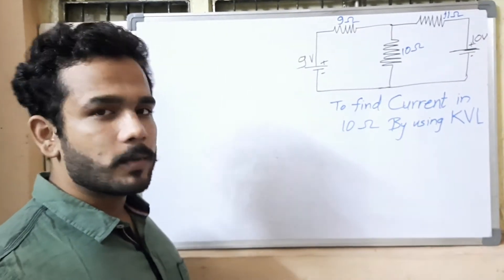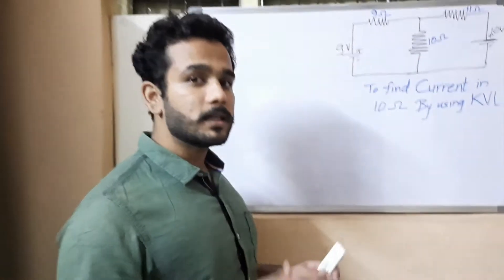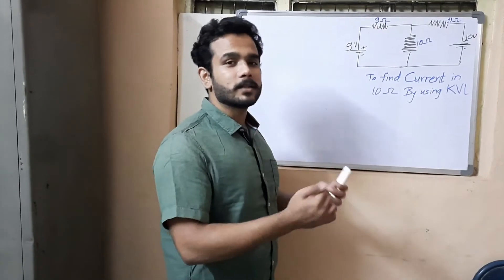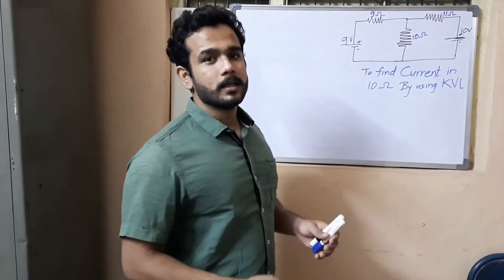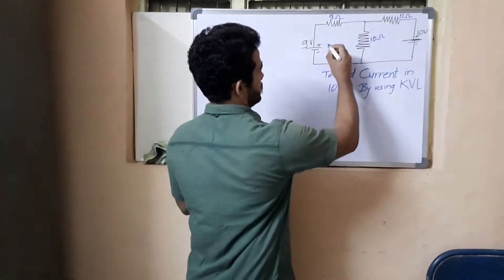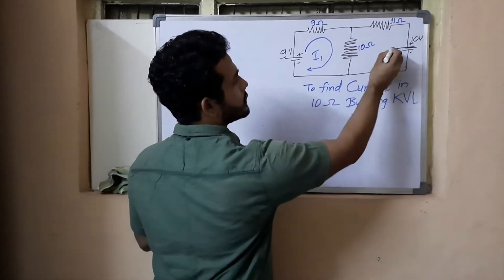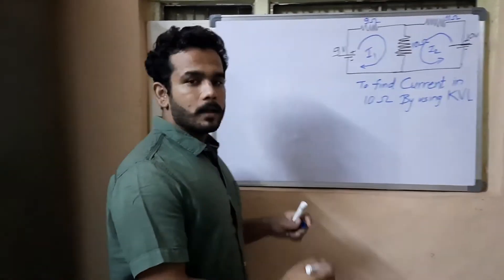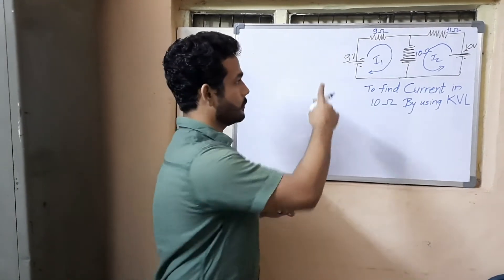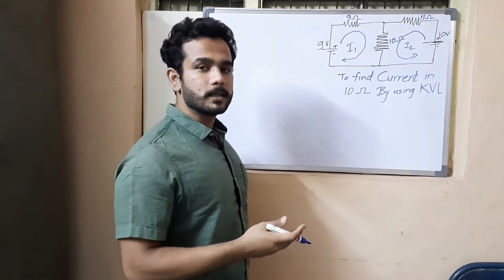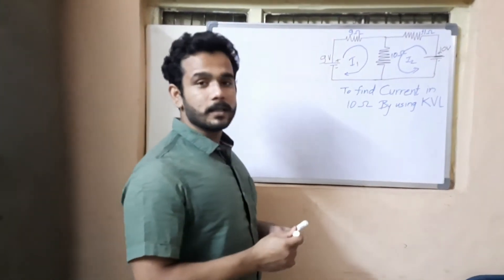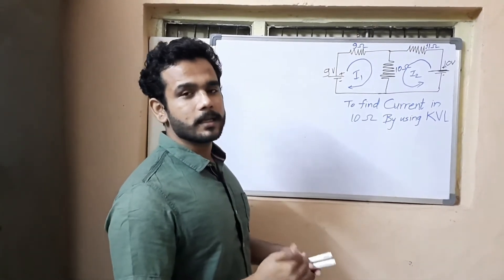Today we will discuss Kirchhoff's Voltage Law when tracing a circuit in the direction opposite to the given direction of current. Let's say we are deciding the path of currents I1 and I2. We will trace mesh 1 opposite to the direction of I1, and mesh 2 opposite to the direction of I2. We will see how KVL applies and how the sign convention changes regardless of tracing direction.